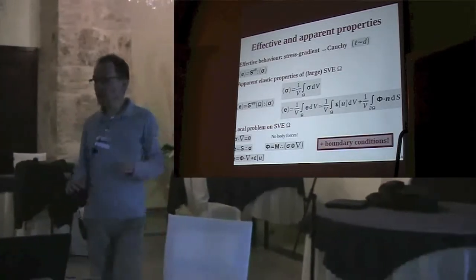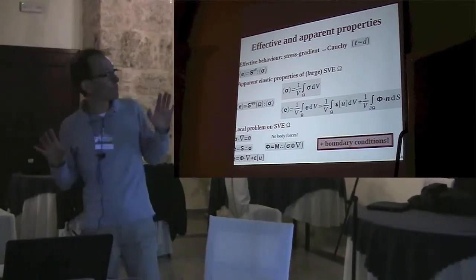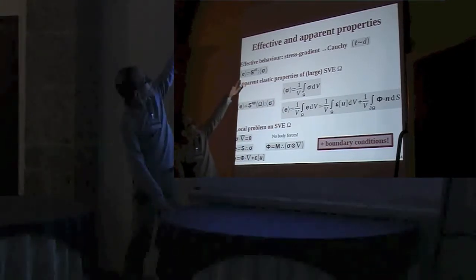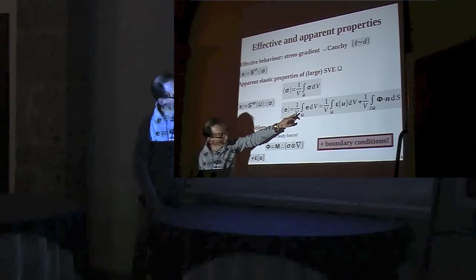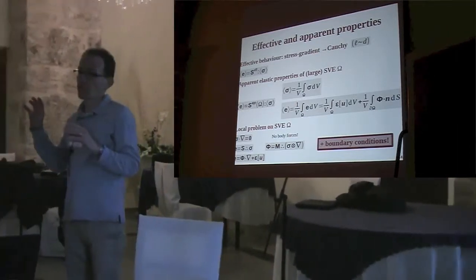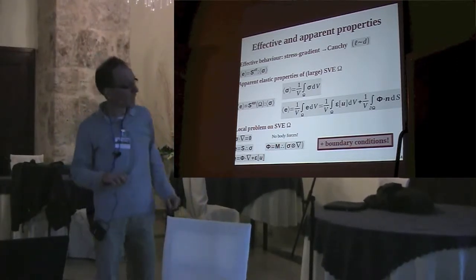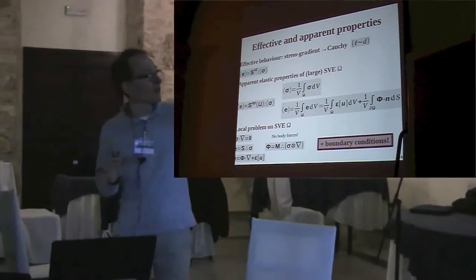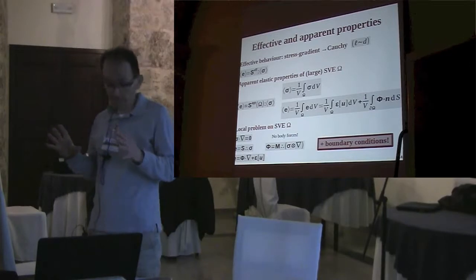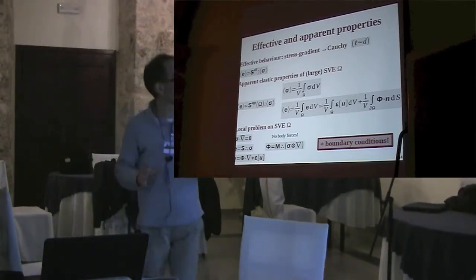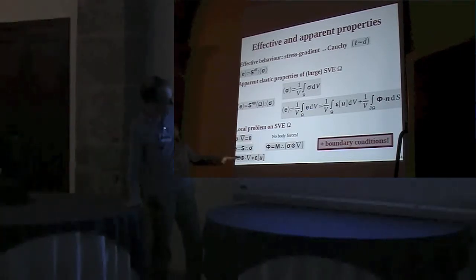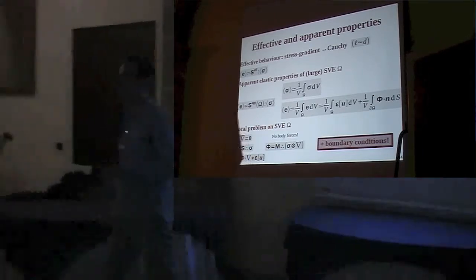Since we expect a Cauchy material at the macroscopic level, the macroscopic constitutive law is a simple stress-strain linear relationship. The macroscopic stress is the average of the local stresses, while the macroscopic strain is the average of the total strain — the average of the symmetric part of the gradient of the displacement plus a contribution of the micro-displacement. In a computational setting, to estimate the effective properties, you need to compute the apparent properties of finite-size statistical volume elements by solving a standard local problem with equilibrium, constitutive laws, strain-displacement relationships, and appropriate boundary conditions.